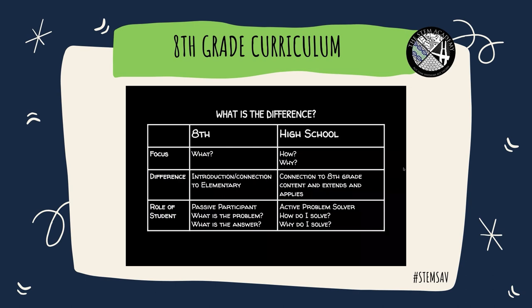There's a big difference between eighth grade and high school physical science. In eighth grade, we focus on what. In high school, we focus on how and why. Eighth grade is an introduction and connection to elementary, and high school is a connection to what you would typically learn in eighth grade, extending and applying it.